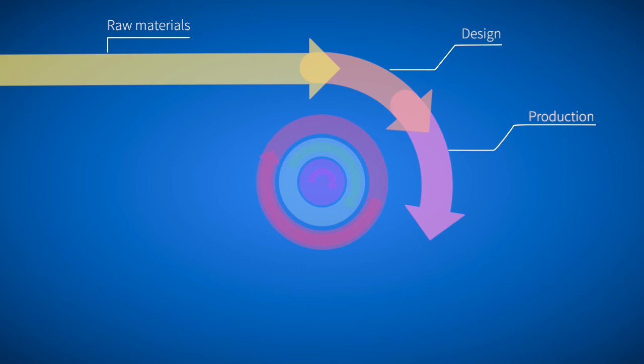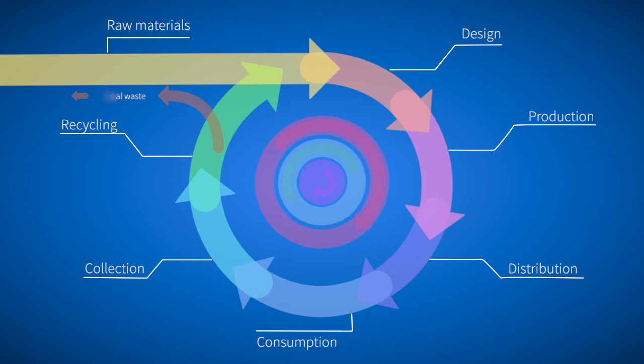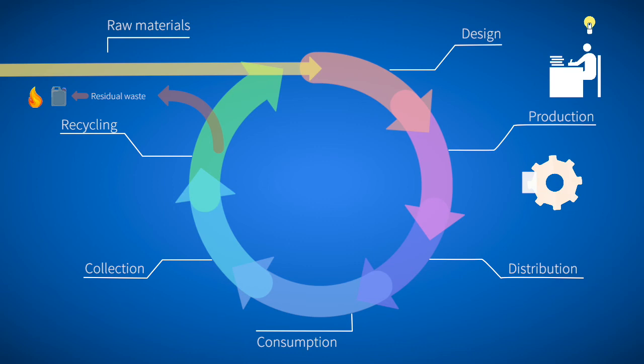The development of a circular economy represents a way to meet this challenge. This economic model emulates the way natural ecosystems operate and encourages everyone involved to consider alternatives to throw away habits. Instead, used items should be recycled as secondary raw materials, remanufactured into new products, or used as a source of energy. Waste then becomes an asset and a resource.